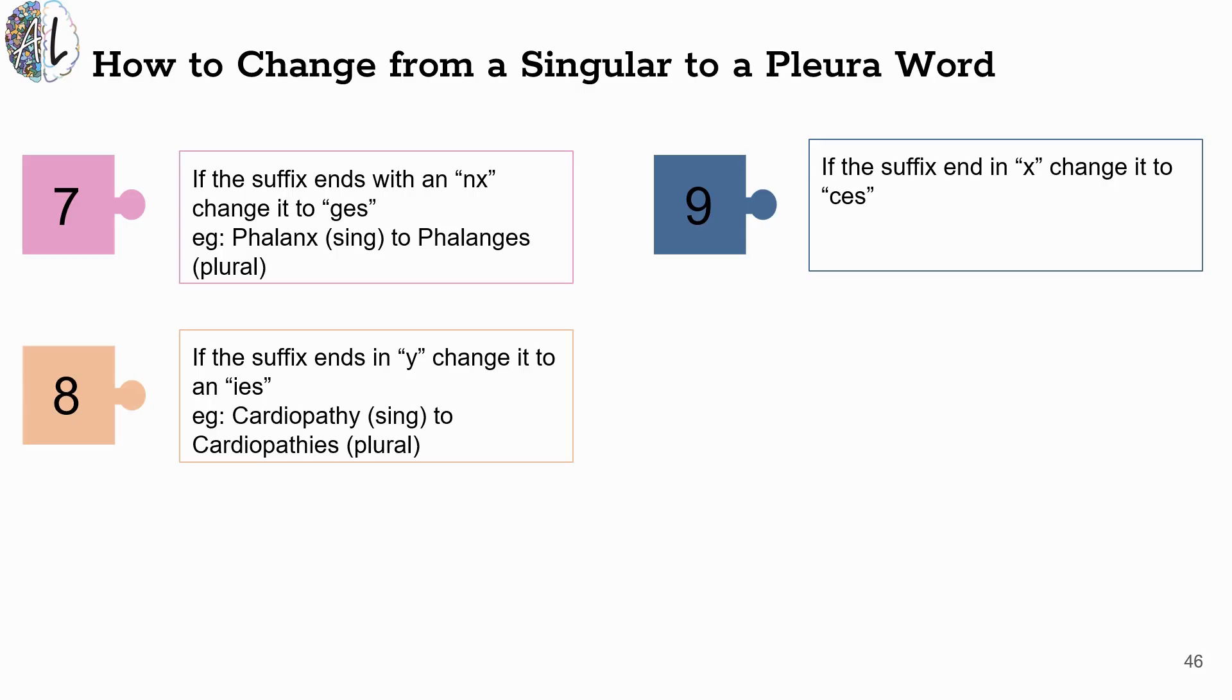And last but not least, if a suffix ends in an X, we are going to change it to a CES ending. The word thorax refers to a single chest. The word thoraces with the CES changed ending refers to more than one chest cavity.